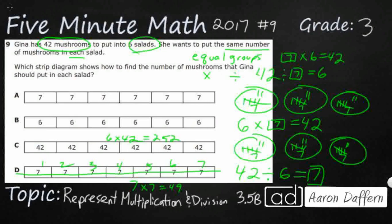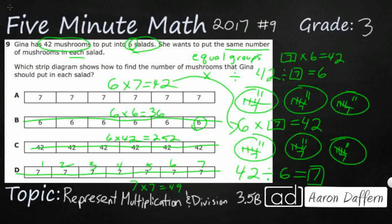So we're left with 6 sixes or 6 sevens. This one — 6 groups of 6 — is close but not quite; it's going to be 36. If you got the wrong answer, you might have chosen this one just because you saw the 6, but there are 6 salads — that doesn't necessarily mean there are 6 mushrooms in each salad. This is 6 groups of 7, and that gets us back to our 42 mushrooms. So our answer is going to be A.